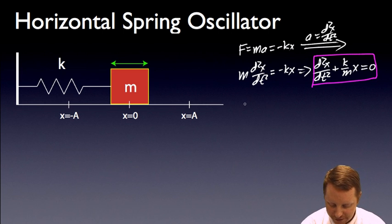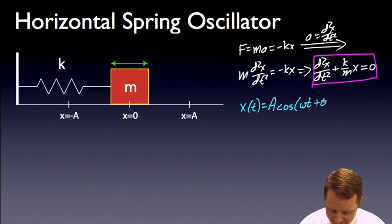the general solution to this differential equation is that x as a function of time is going to be equal to the amplitude, some constant a, times the cosine of omega t plus any phase shift we might have. And we're not going to worry a whole lot about phase shift today.